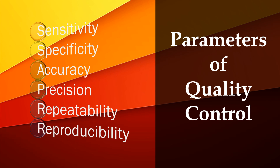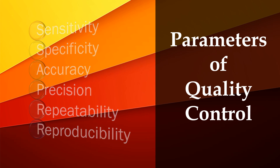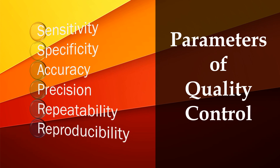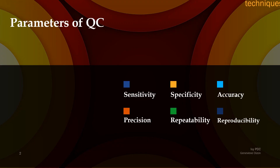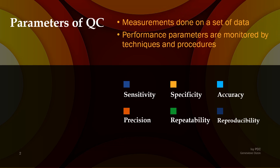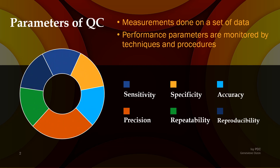Quality control in the laboratory may be defined by different parameters, and these parameters are sensitivity, specificity, accuracy, precision, repeatability, and reproducibility. Parameters in quality control are different measurements that are done on a set of data. These six different performance parameters are monitored by different techniques and procedures to make sure that quality is always maintained inside the laboratory.